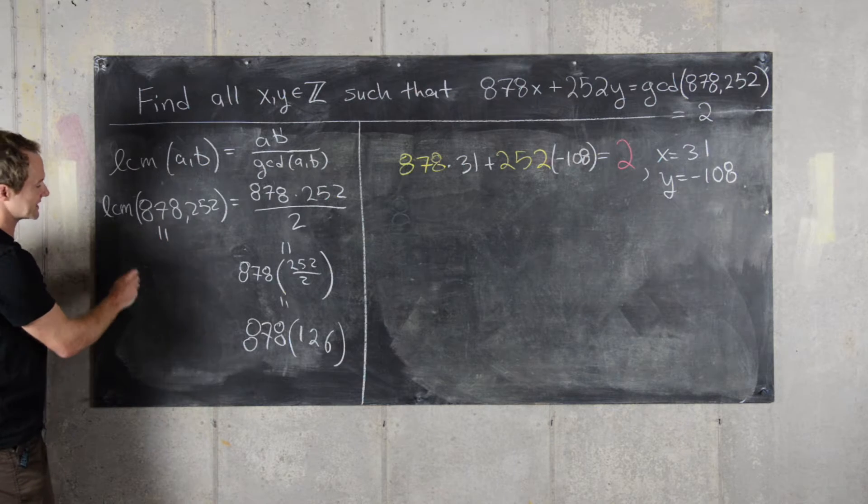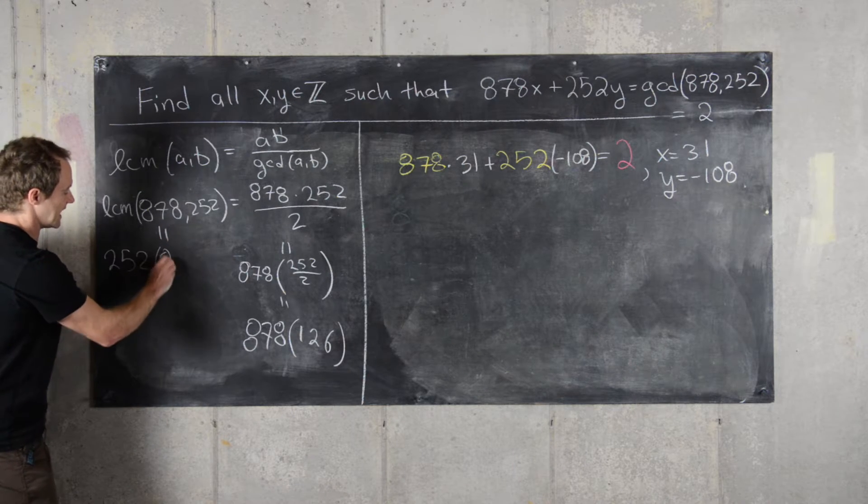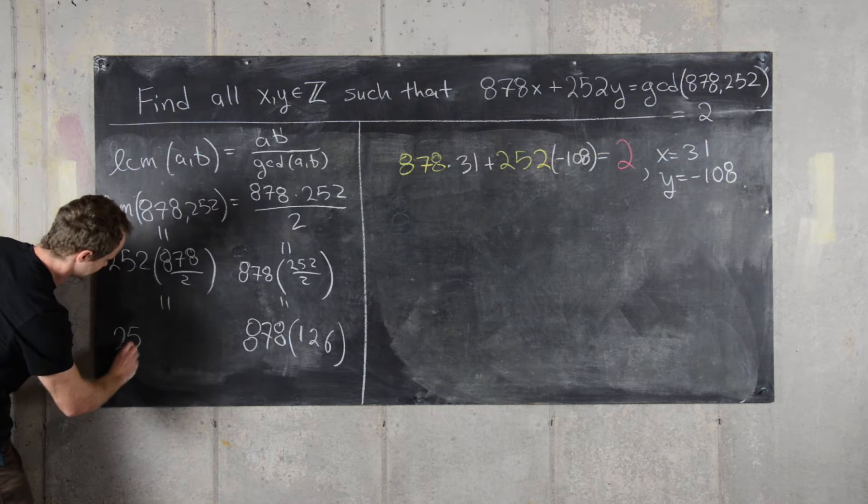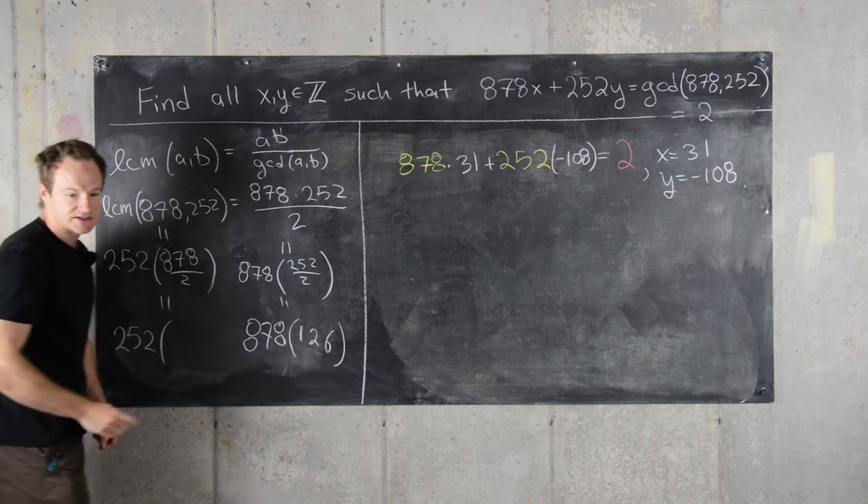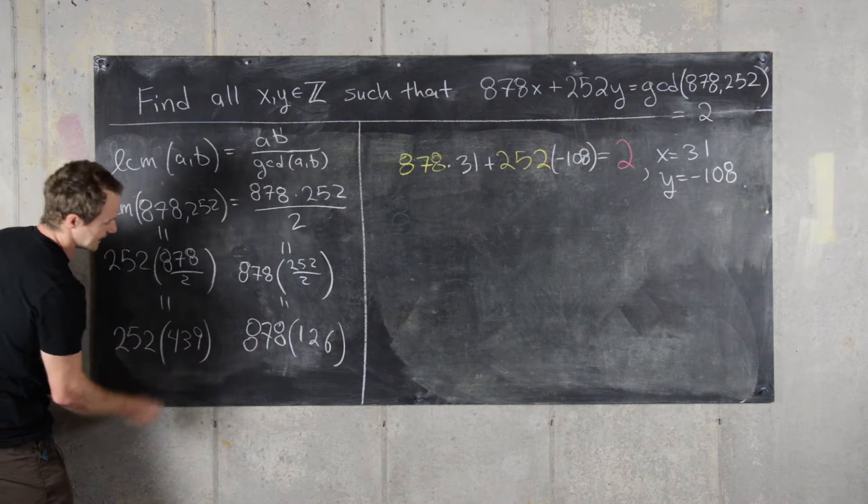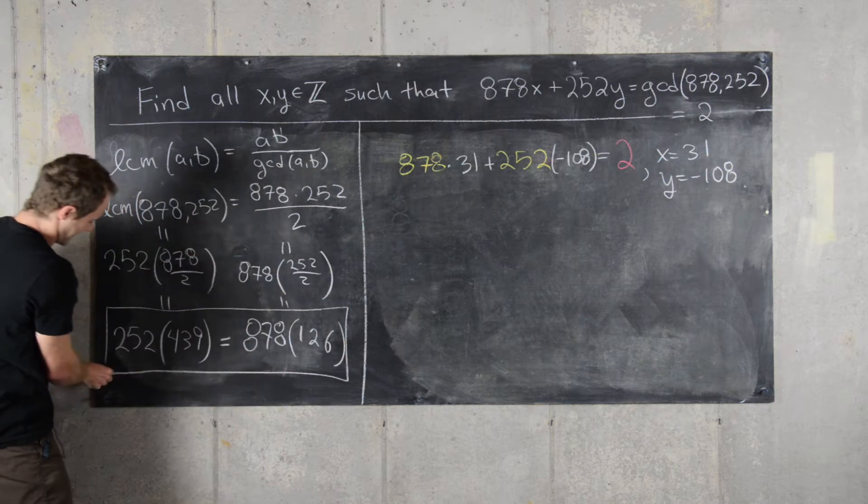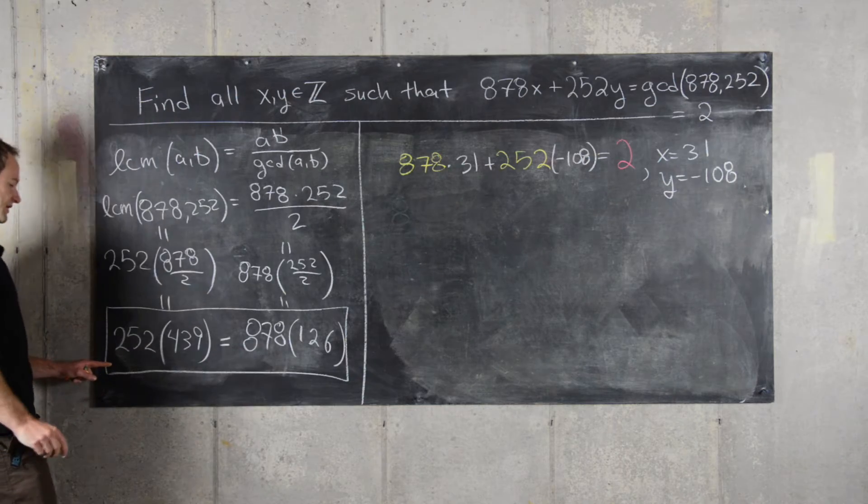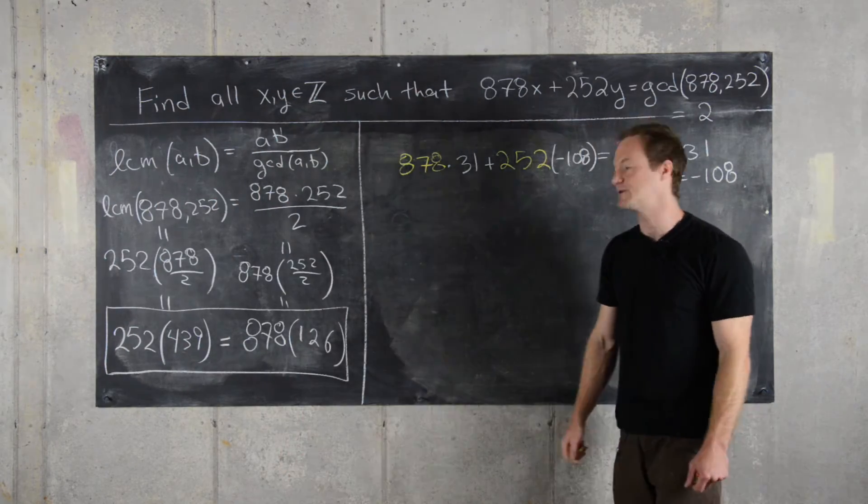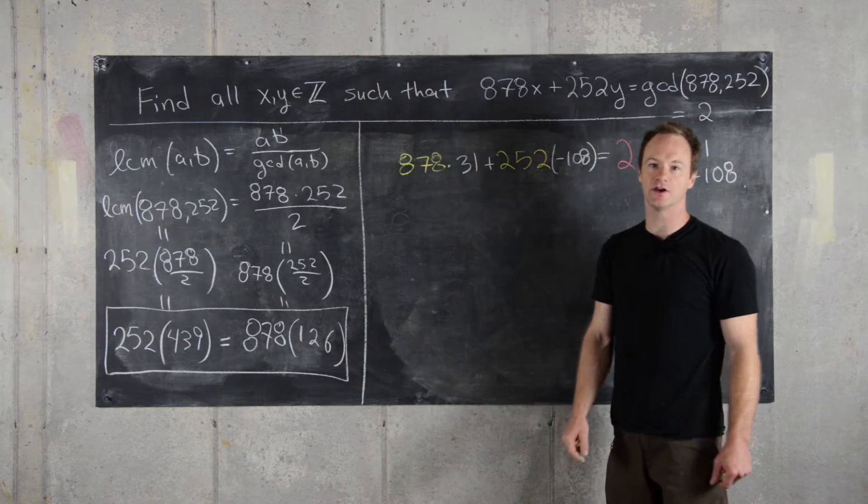And then likewise, we can express this as 252 times 878 over 2. So similarly, that's 252 times 439. So here, we're going to use this equation that we constructed with the LCM. We have 252 times 439 equals 878 times 126.